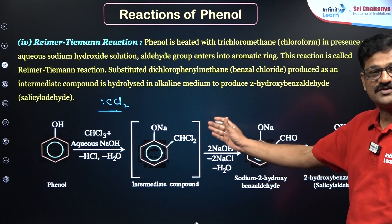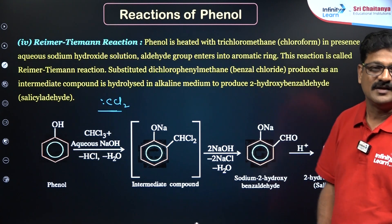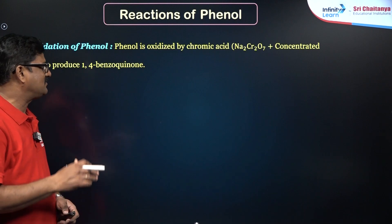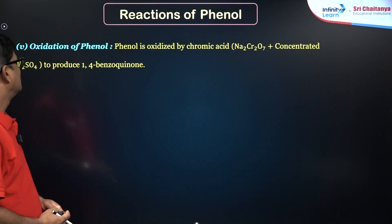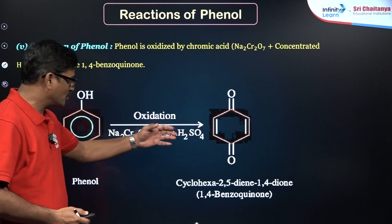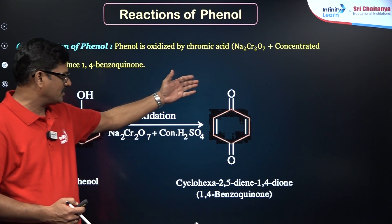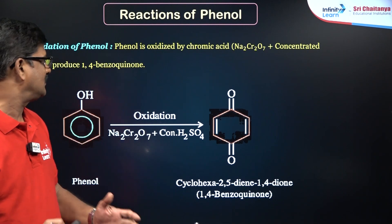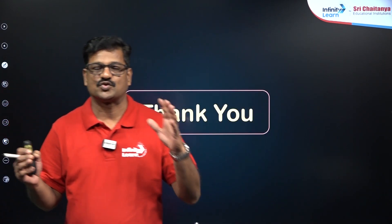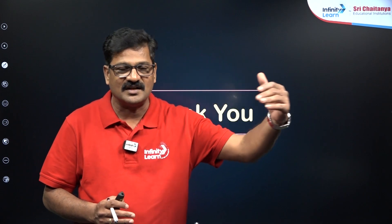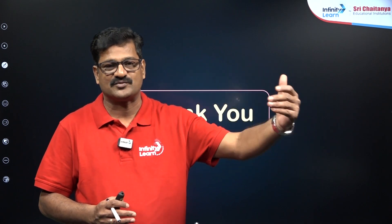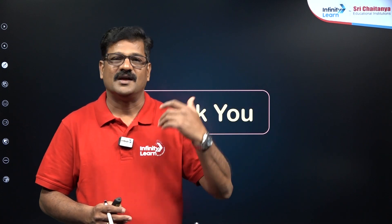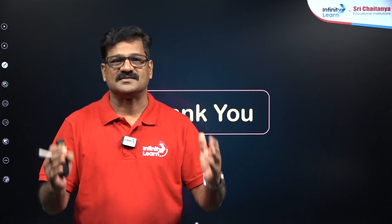Oxidation of phenol: phenol is oxidized using chromic acid to give 1,4-benzoquinone. To summarize this session on phenol reactions: we covered reactions of the acidic nature of phenol, electrophilic aromatic substitution including nitration and bromination, oxidation, and reduction — these are the set of reactions very important for phenols.